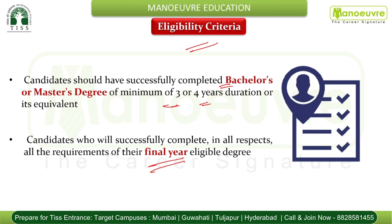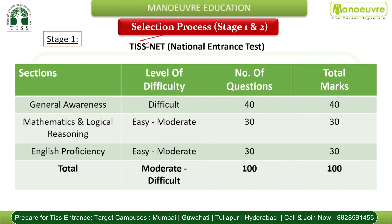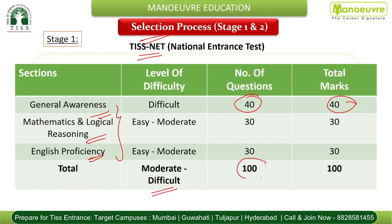The selection process is divided into two stages. Stage one is the TISSNET entrance exam, which has three sections: General Awareness, Mathematics and Logical Reasoning, and English Proficiency. General Awareness is the dominating area, followed by Maths and Logical Reasoning, then English Proficiency. The overall difficulty level is moderate to difficult. Total questions: 100, total marks: 100.